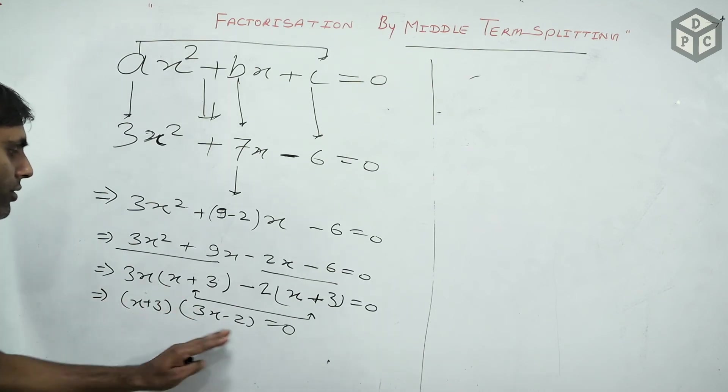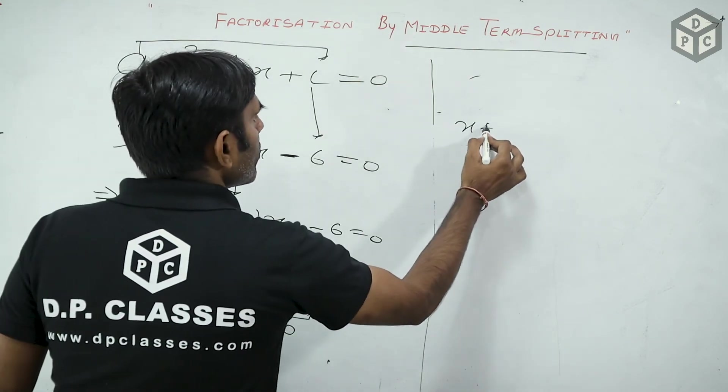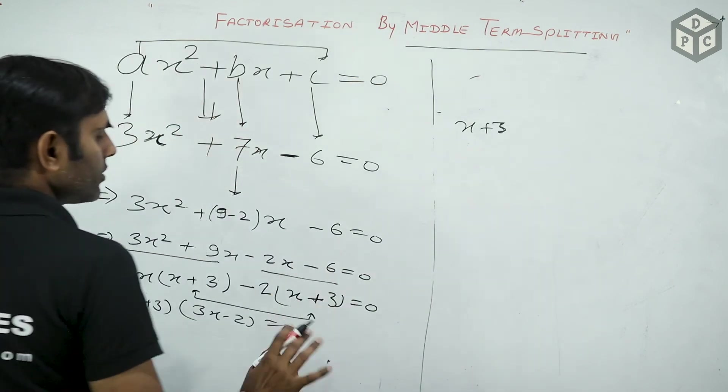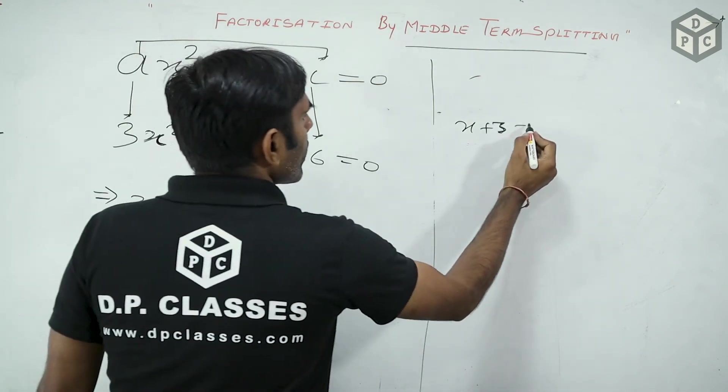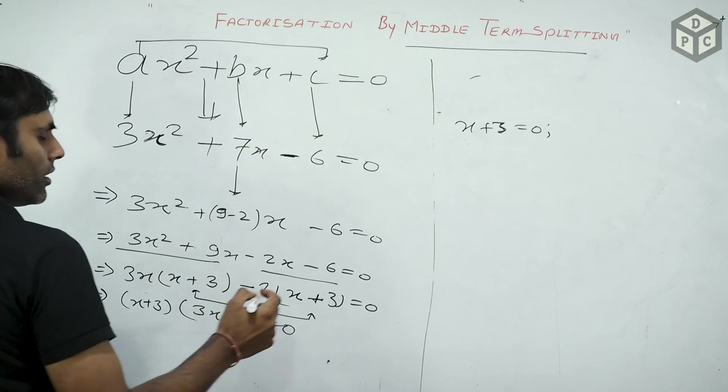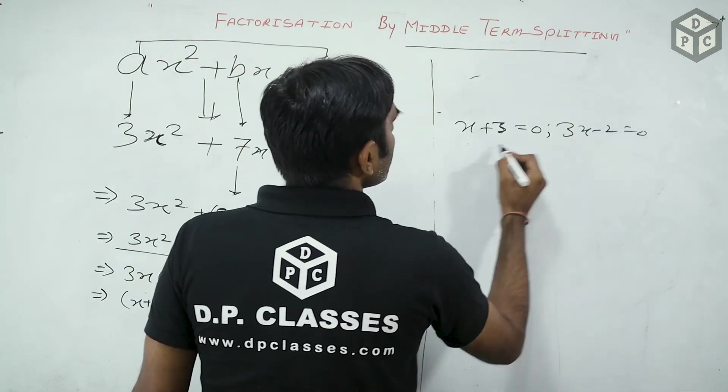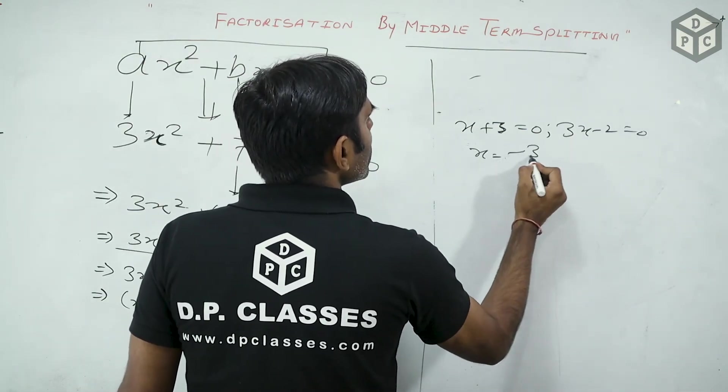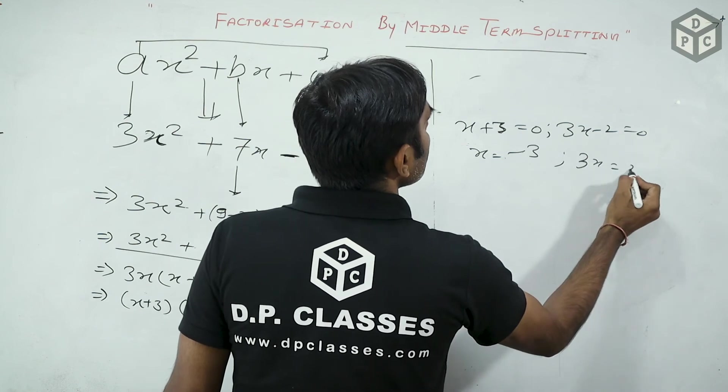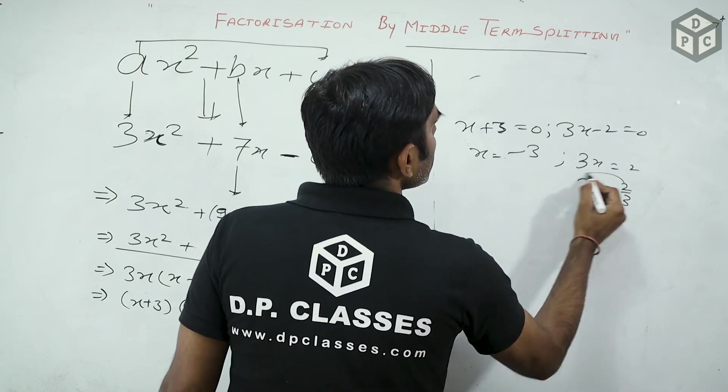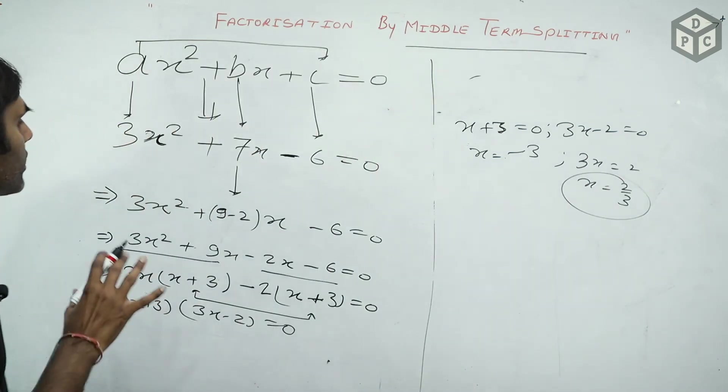This is the factor. If I find out 0, then it will be equal to 0. The other factor is clear. This is equal to 0. 3x minus 2 is equal to 0. This is equal to minus of 3. The other is equal to 3x is equal to 2. x is equal to 2 by 3. So, there are two values. So, this was the middle term splitting.